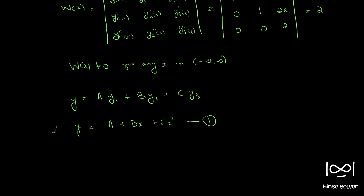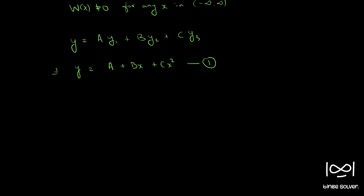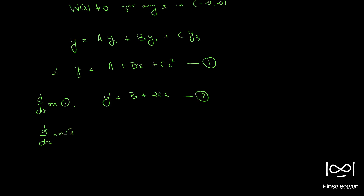Let this be equation 1. We have three arbitrary constants, and we need to eliminate them by differentiating. Differentiating equation 1, we get y' = b + 2cx, which is equation 2. Differentiating equation 2, we get y'' = 2c.